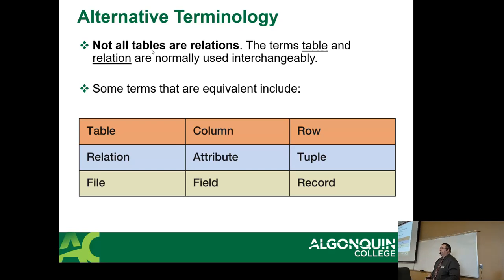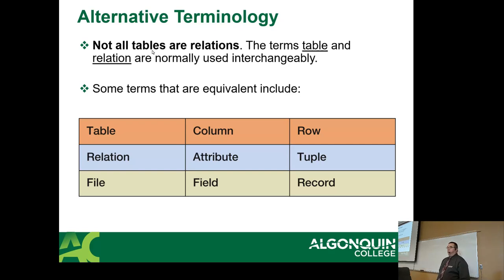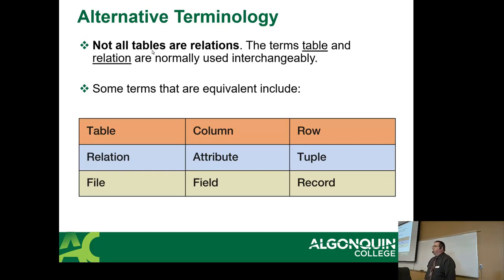This is the worst part of database design — there's so much terminology and a lot of it overlaps. Someone who went to Sheridan might use the phrase 'record'; someone who came here uses 'row'; someone from university uses 'tuple.' They're all the same thing — just different words. We just have to accept that there are words that overlap and build a little lexicon in our heads.